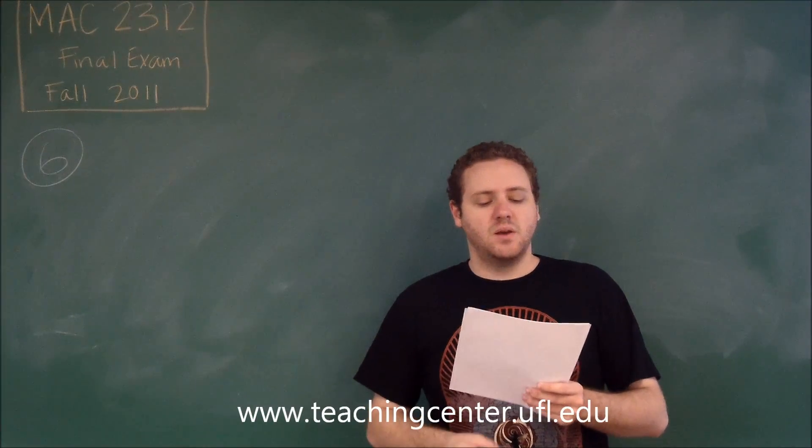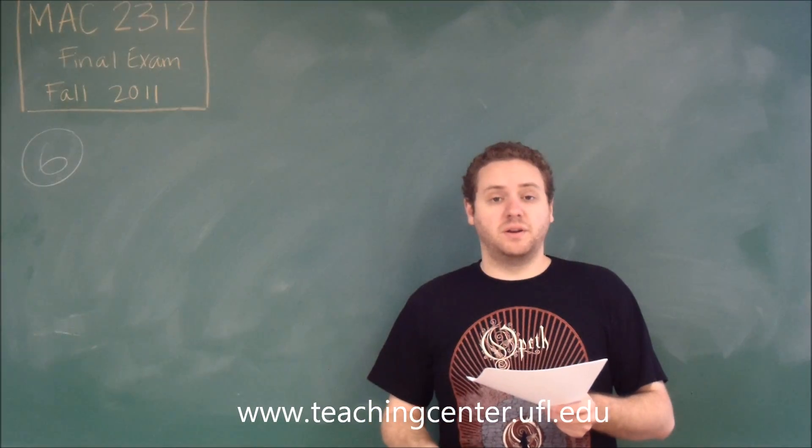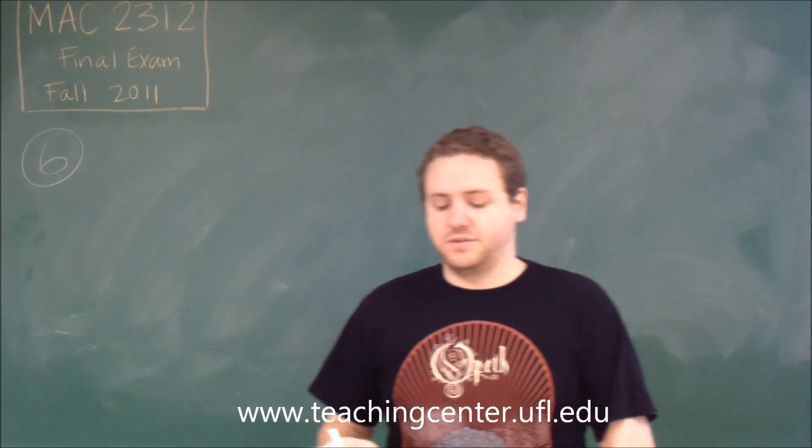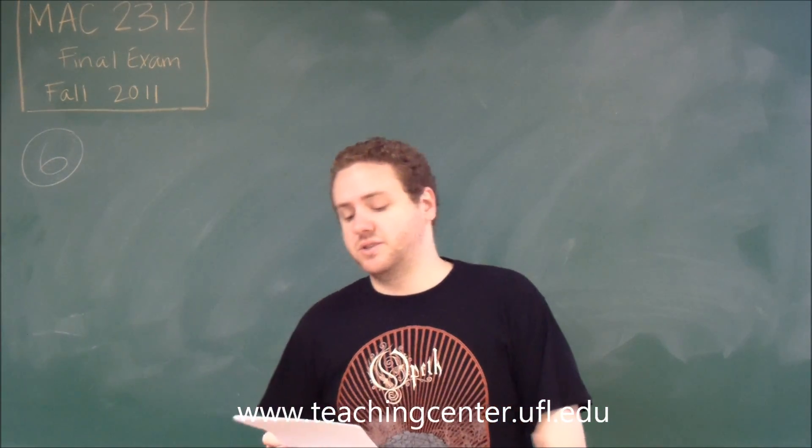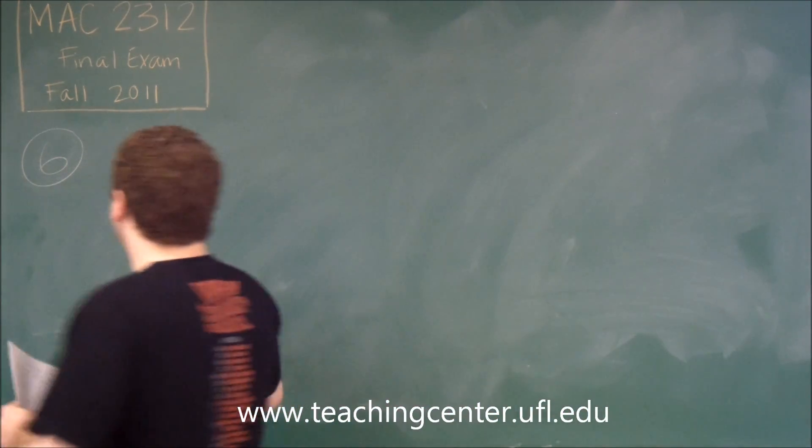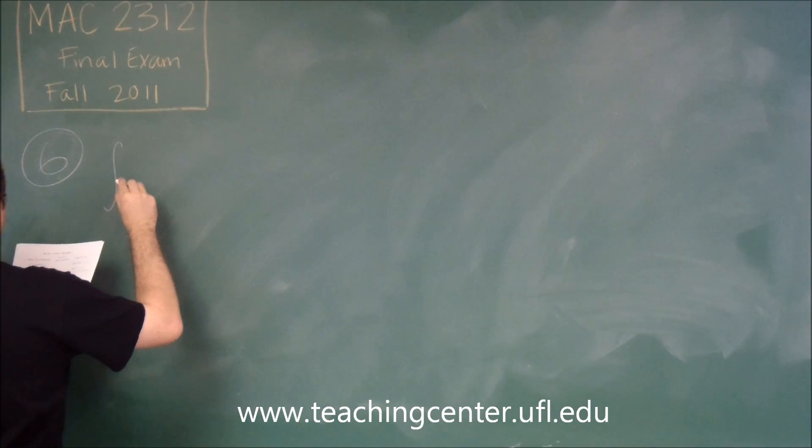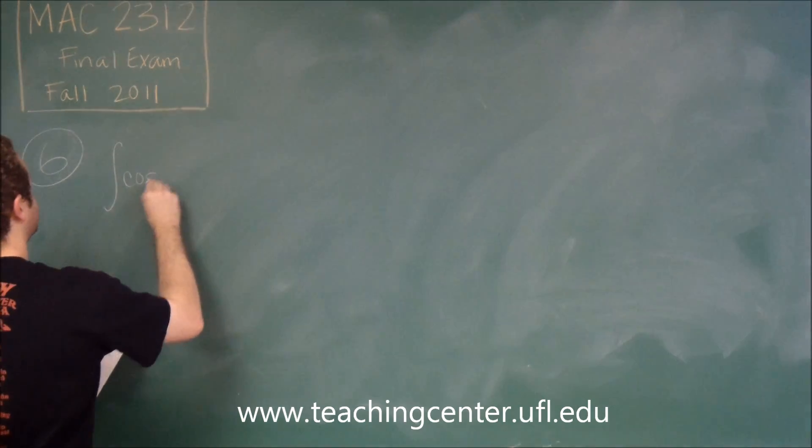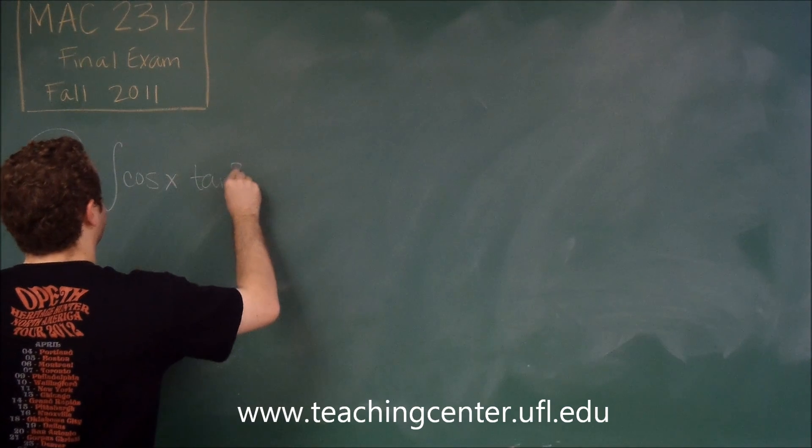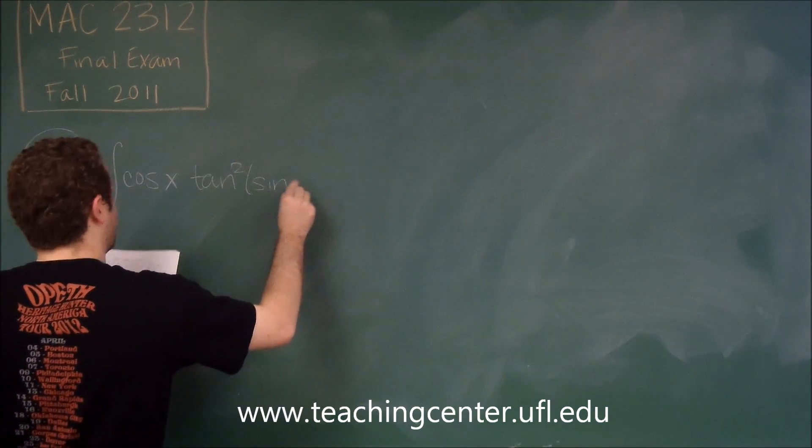For the next problem, number 6, we're combining integration strategies. We're going to use both u-substitution and trig integral strategies. We have the integral of cosine x times tan squared of sine x.